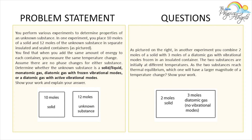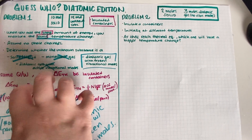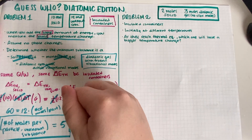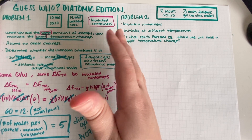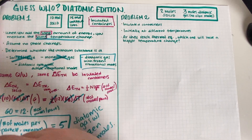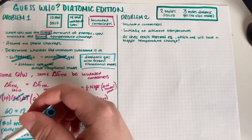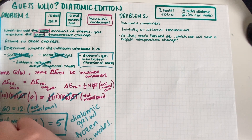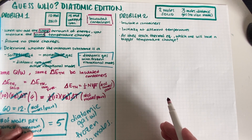Now let's do part B. In another experiment, you combine 2 moles of a solid with 3 moles of a diatomic gas with vibrational modes frozen in an insulated container. The two substances are initially at different temperatures. As the two substances reach thermal equilibrium, which one will have a greater magnitude of temperature change?